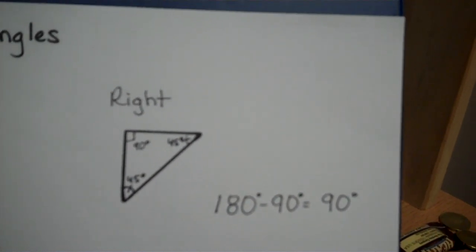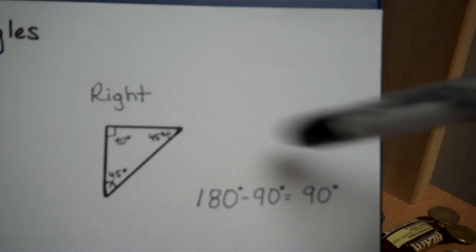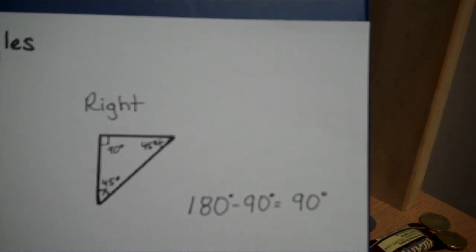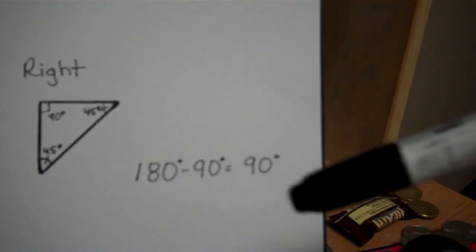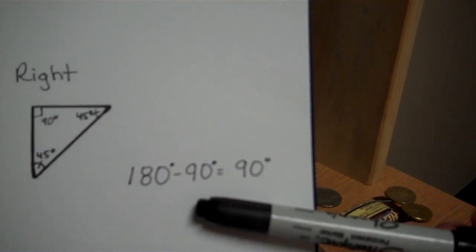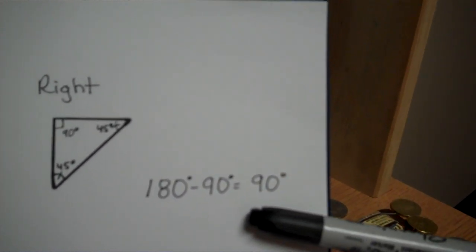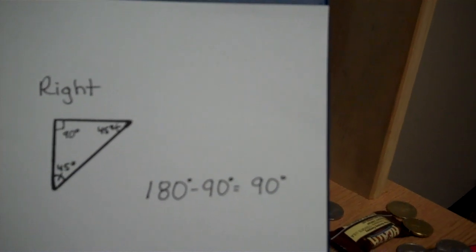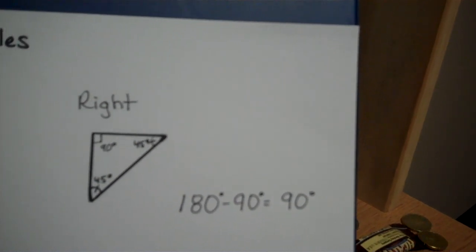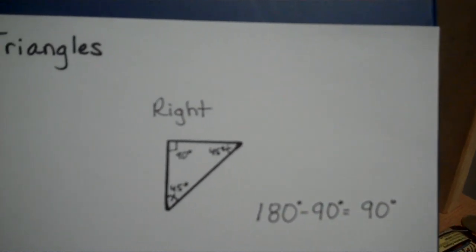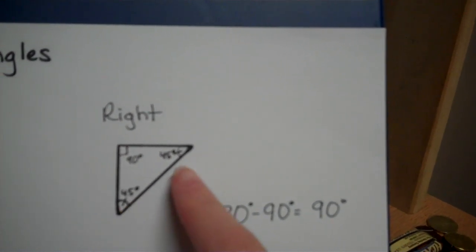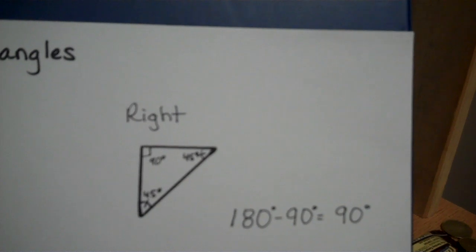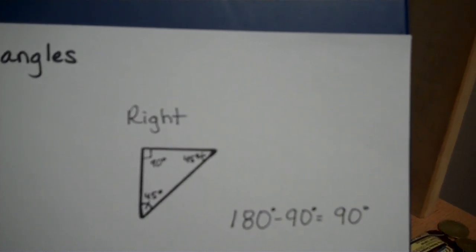In this right triangle, our right angle is 90 degrees. If we do the same thing for this triangle that we did for obtuse, 180 minus 90 equals 90 degrees. That would be another right angle, right? But we have two more angles in the triangle that we need to contribute to the 180 total degrees. This leaves us with 45 degrees for each of the other angles.